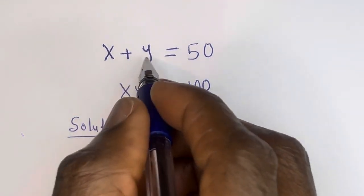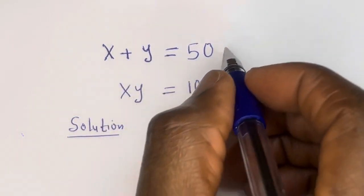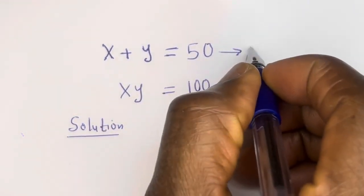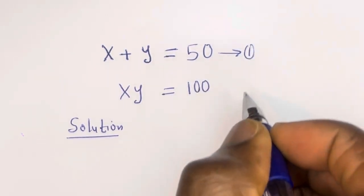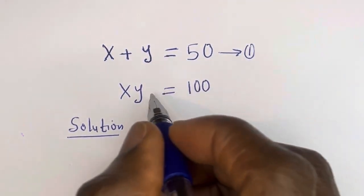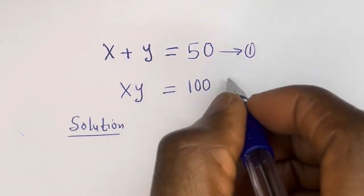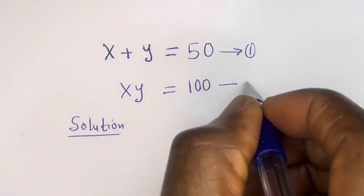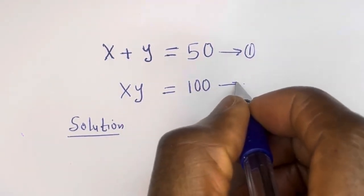x plus y is equal to 50 — let's call this equation 1. xy is equal to 100 — let's call this equation 2.